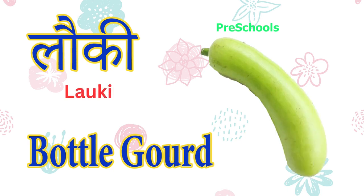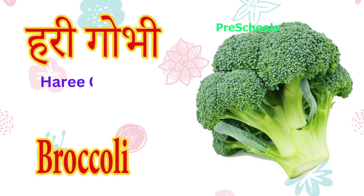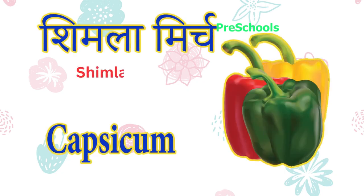Lawki — bottle gourd. Harigobi — green cabbage. Patagobi matlab cabbage — cabbage. Shimlamich matlab capsicum — capsicum.